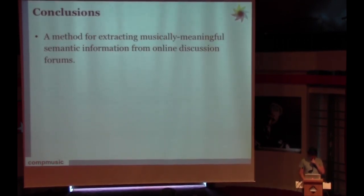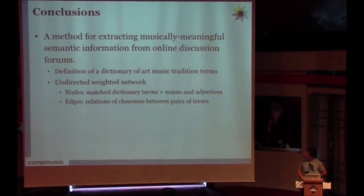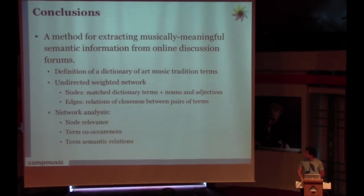To summarize, we presented a method for extracting musically meaningful semantic information from online discussion forums. First, we defined a dictionary of art music tradition terms. We generated a directed weighted network of these forum posts where the nodes were the matched dictionary terms plus nouns and adjectives. And the edges were the relations of closeness between pairs of terms. And we finally analyzed the network from the node relevance, term concurrences, and term semantic relations.